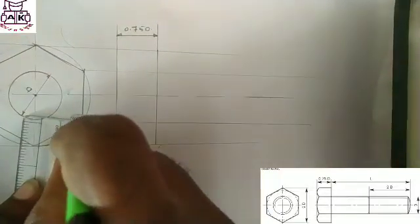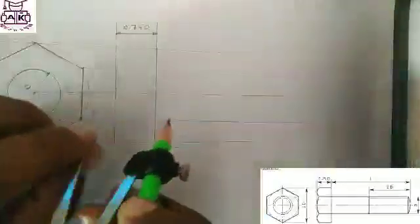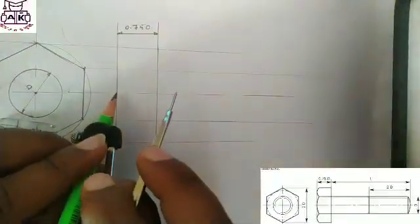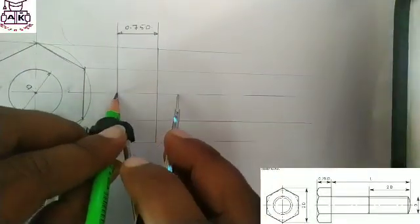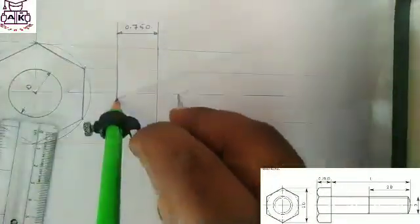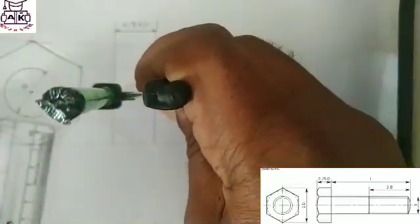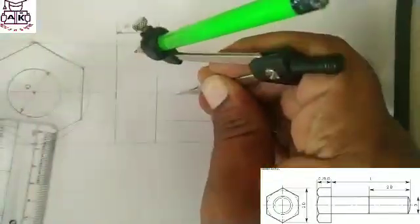Take 1.2 into D dimension, 1.2 into 30. This is the position of compass, draw arc. And this is the R.